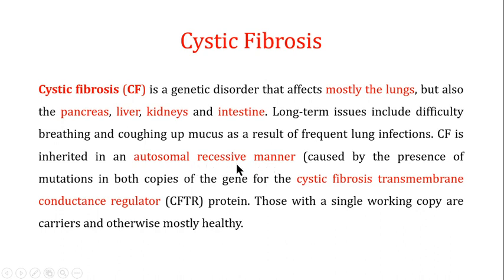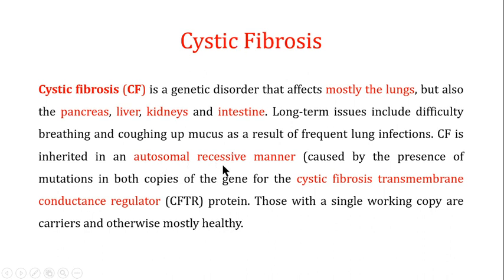Cystic fibrosis is an autosomal recessive disease. The gene for cystic fibrosis is present on an autosomal chromosome and is inherited in a recessive manner. Recessive means that both copies of the gene for the cystic fibrosis transmembrane conductance regulator protein — the CFTR — are abnormal or mutated in cystic fibrosis. Autosomal means the gene is on an autosomal chromosome, and recessive means both copies of the CFTR gene are mutated.